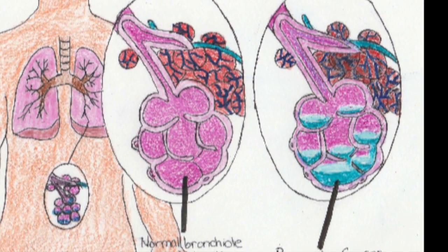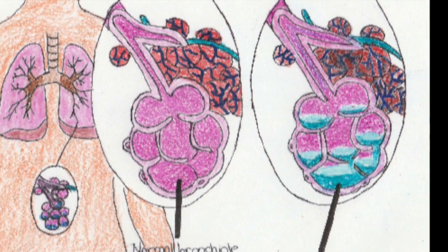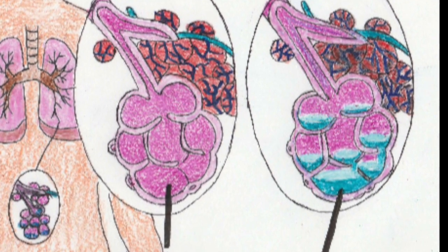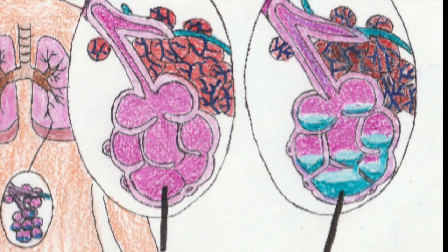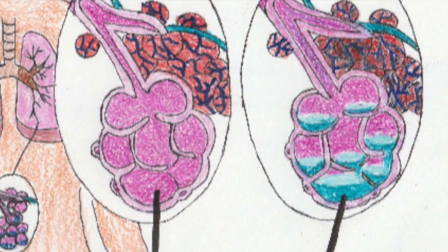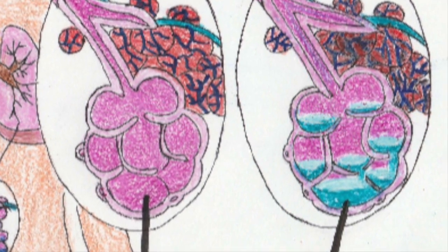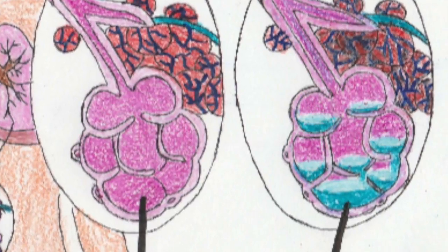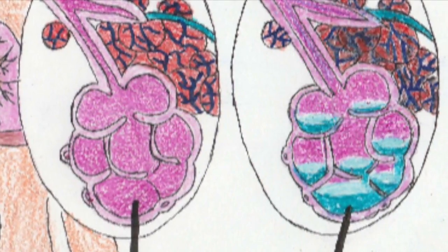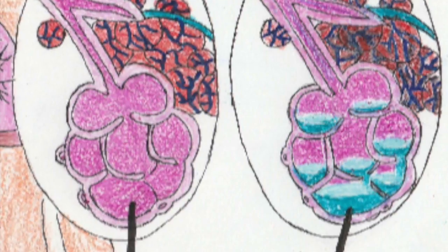Gas enters and exits the bloodstream using simple diffusion. Due to pressure differences, carbon dioxide leaves the bloodstream and enters the lungs to be expelled, while oxygen enters the alveoli and into the bloodstream.